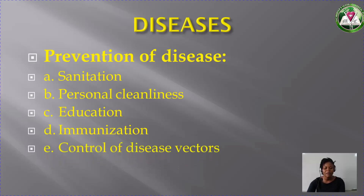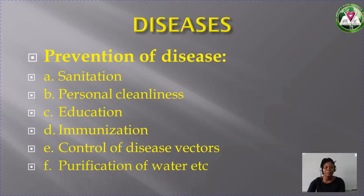Five, control of disease vectors — like mosquitoes. We can control them by getting rid of stagnant water and clearing our gutters and bushes around our environment. Six, purification of water. It is advisable to purify our water before drinking it. You can purify water by boiling.